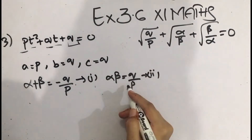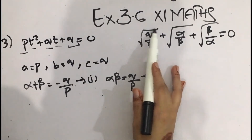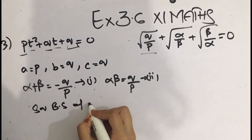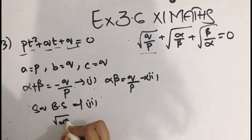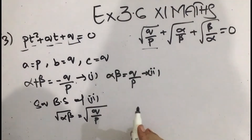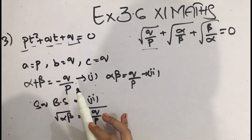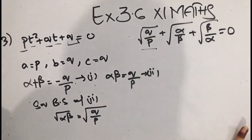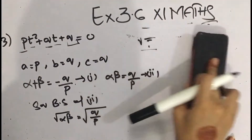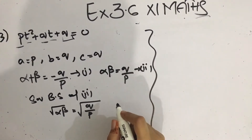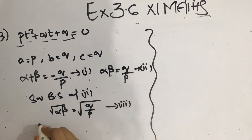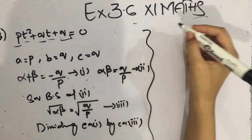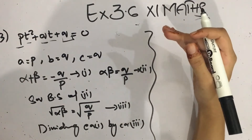I will call the sum of roots equation 1 and the product of roots equation 2. If I take the square root of both sides of equation 2, I get: √(α·β) = √(q/p). I will call this equation 3. Now I will divide equation 1 by equation 3, because we need to take specific steps to prove the result.